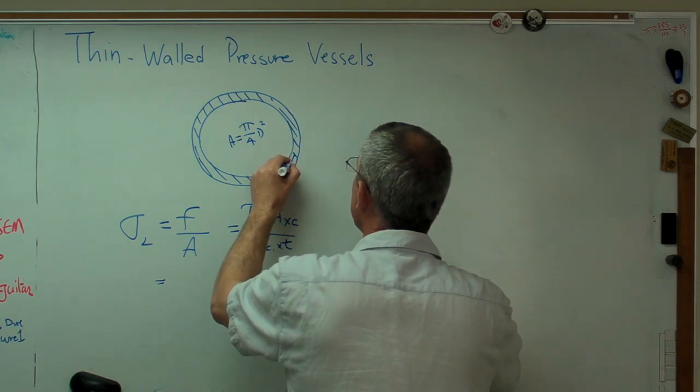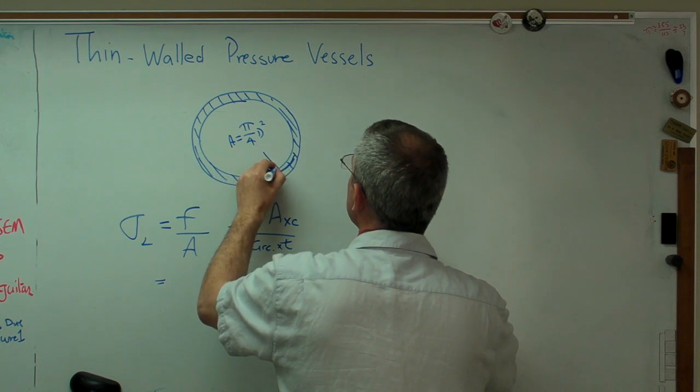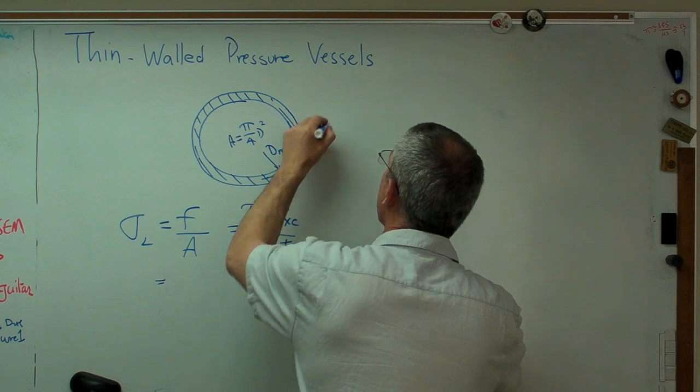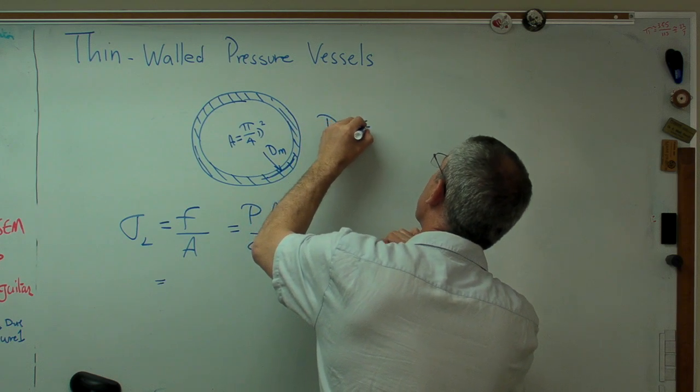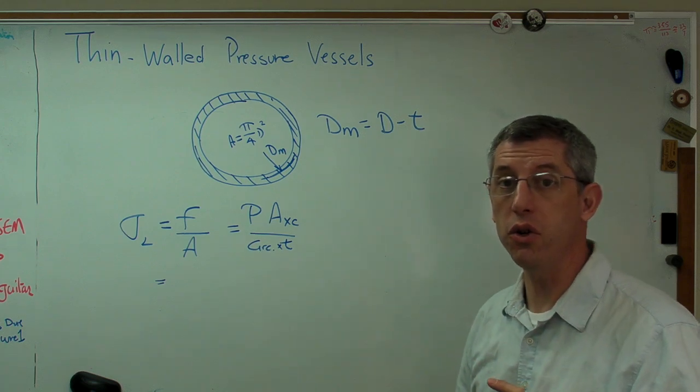We have an inside and an outside diameter. What we're going to work with is something called mean diameter. It's halfway between the inside and the outside diameter. Okay, and the mean diameter is the outside diameter minus one wall thickness, not two.